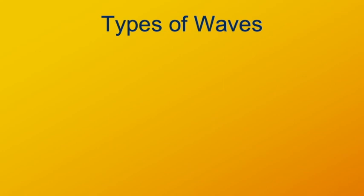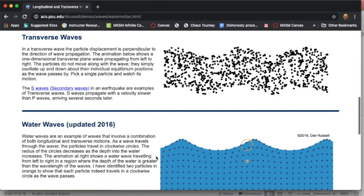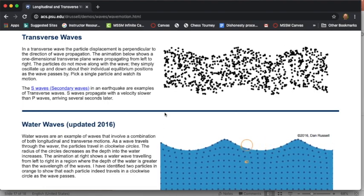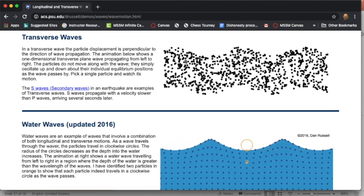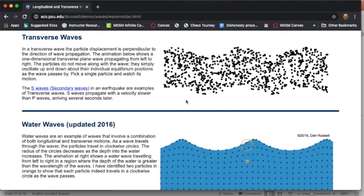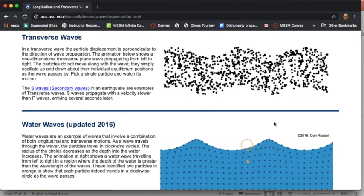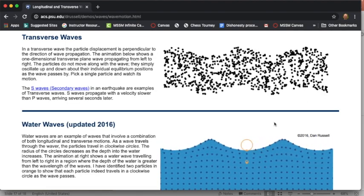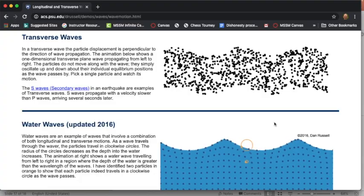The specific kinds of waves demonstrated so far are all known as transverse waves. This is the case where the motion of the medium is perpendicular to the direction the wave travels — for example, a wave in a string or coil spring. The particles move up and down while the wave disturbance travels from left to right, at 90 degrees to the particle motion. Transverse — 'trans' meaning across.